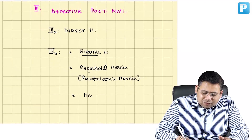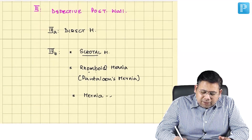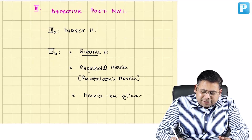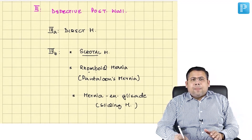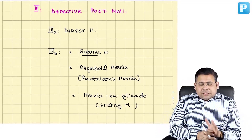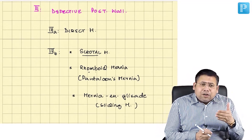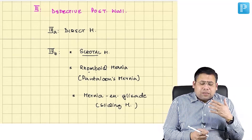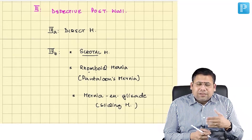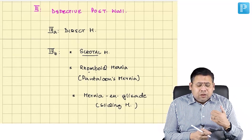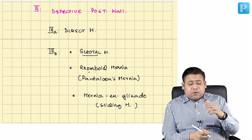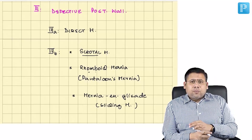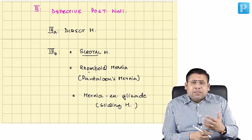Next we have hernia en glissade, or sliding hernia. This is a type of hernia exclusive to males where a part of the herniating sac is formed by the viscus itself — part of the viscus forms the wall of the hernia sac. This is really dangerous because when you try to strip this wall, you can stretch and damage the viscus.